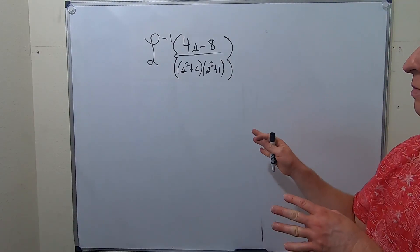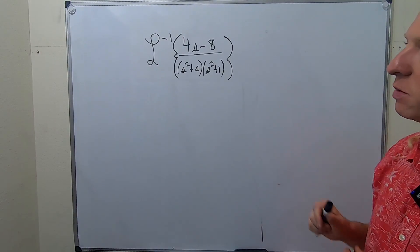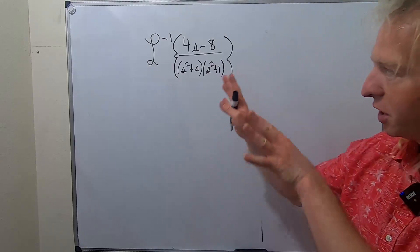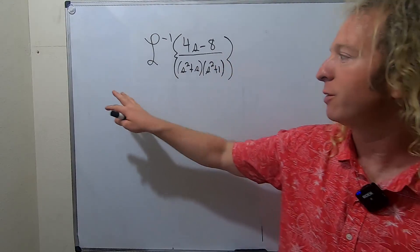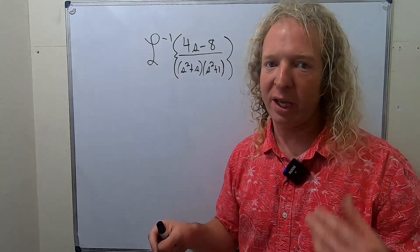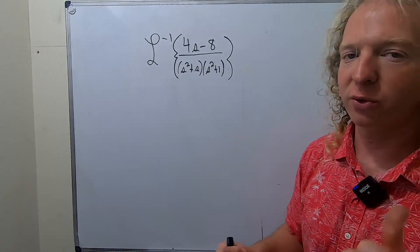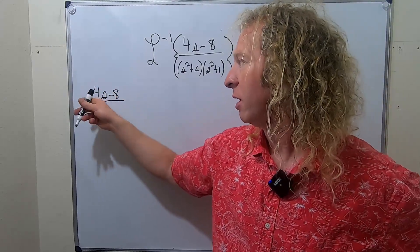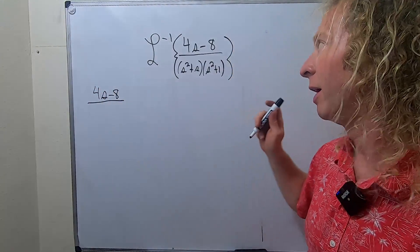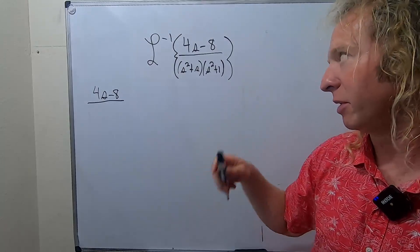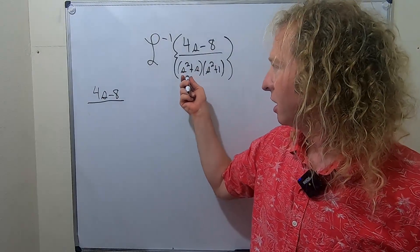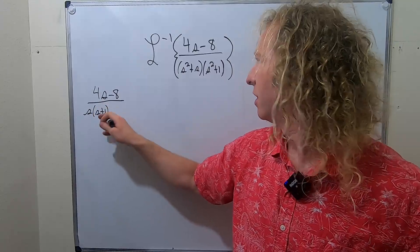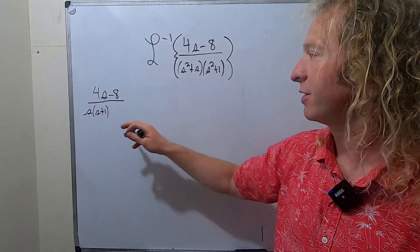In this video, we're going to find the inverse Laplace of this expression. So this looks like we're going to use partial fractions — it looks pretty complicated. So let's go ahead and write it over here and try to use partial fractions. We have 4s minus 8 over s times s plus 1 times s squared plus 1.